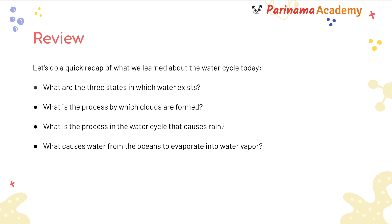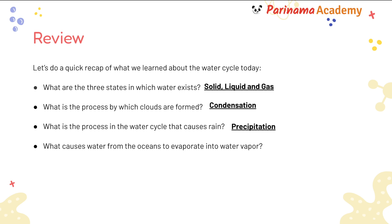Let's do a quick recap of what we learned today about the water cycle. What are the three states in which water exists? The three states are solid, liquid, and gas. What is the process by which clouds are formed? The process is called condensation. What is the process in the water cycle that causes rain? The process that causes rain is precipitation. And lastly, what causes water from the oceans to evaporate into water vapor? Energy from the sun causes water from the oceans to evaporate into water vapor.